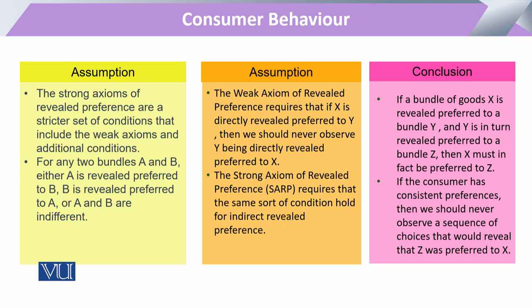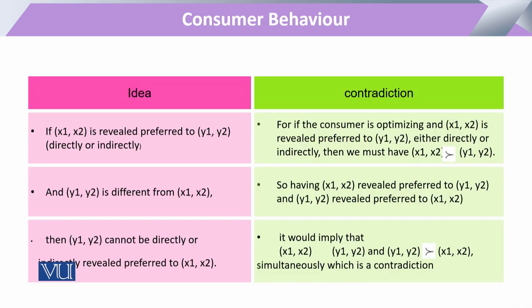Similarly, the consumer can select any one of these three options. Once that option is selected — if he prefers A to B — then in all future combinations, he must always prefer A over B. In any other purchase order, he will not be able to select B over A. If he does so, it means he is violating the strong axiom. So this strong axiom is basically that property which underlies the actual sense of revealed preference.